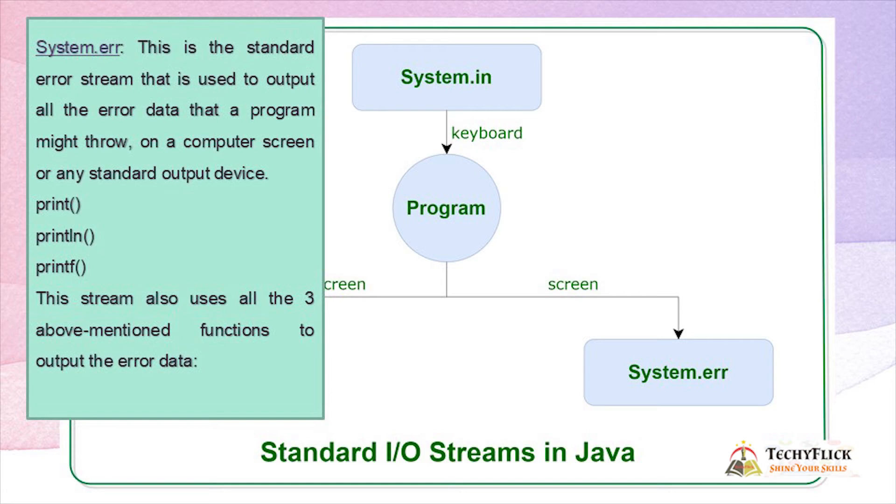This stream also uses all the three above-mentioned functions to output the error data: that is print, println, and printf.